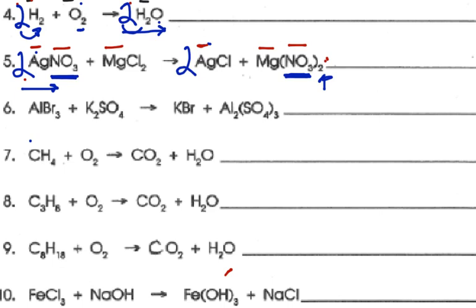For number 6, we have Al on the reactant side and Al on the product side. There's only one on the reactant side and two on the product side, so we put a 2 in front to fix the Al's — now we have two Al's on both sides. Next we check Br. We have a subscript of 3, but remember the 2 distributes through, so that's 2 times 3 giving us 6 Br's on the reactant side. We put a 6 in front of Br on the product side to fix it.